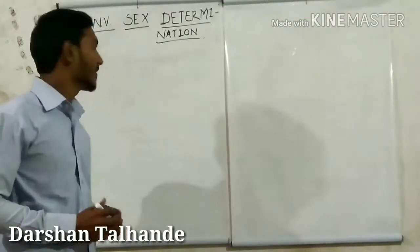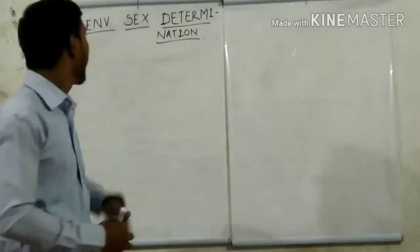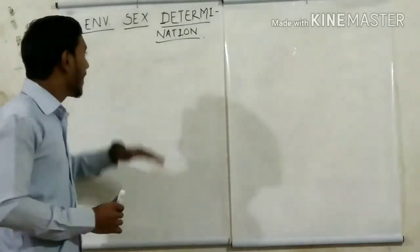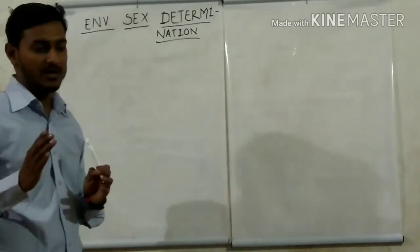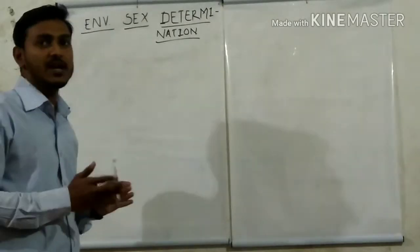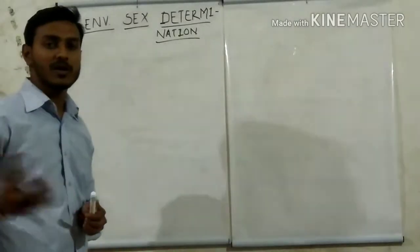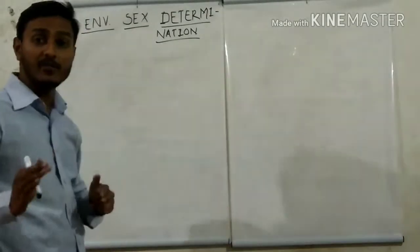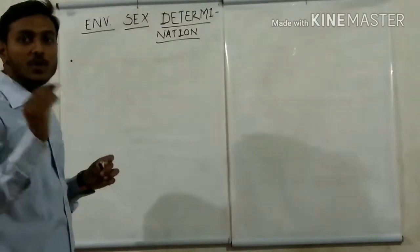Today our topic is Environmental Sex Determination. In some lower organisms, it is an interesting phenomenon that genetics doesn't determine the sex of the organism, but the environment in which the organism lives determines the sex. Till now we have seen that in human beings, if the sex chromosomes XX are present then it is female, and if XY are present then it is male. But in this special phenomenon, the environment determines the sex of the organism, and the example is lower organisms.